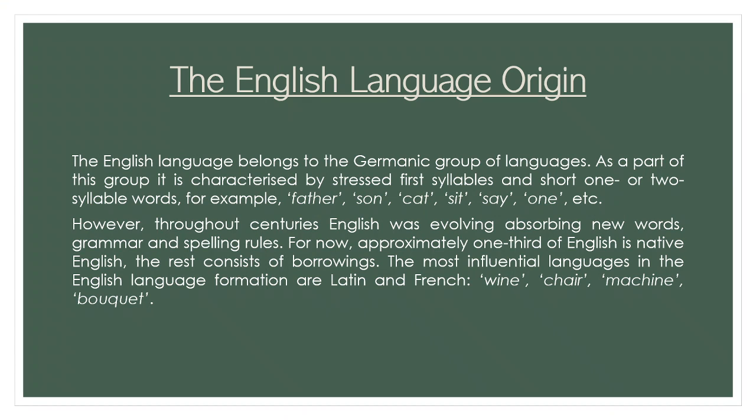The English language origin. First of all, we should know that English belongs to the Germanic group of languages. As a part of this group, it is characterized by polysemy — a phenomenon of existing multiple meanings for one lexical unit. For example, the verbs 'set', 'be', 'bear'. Also characteristic are short one- or two-syllable words, for example, 'son', 'cat', 'seat', etc.